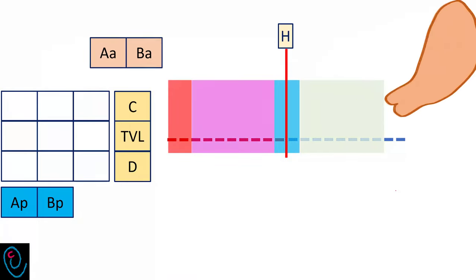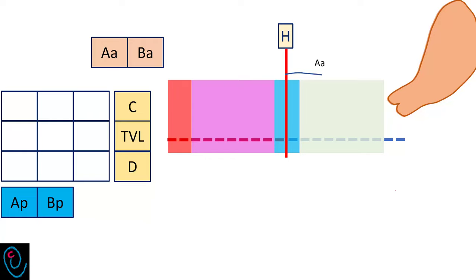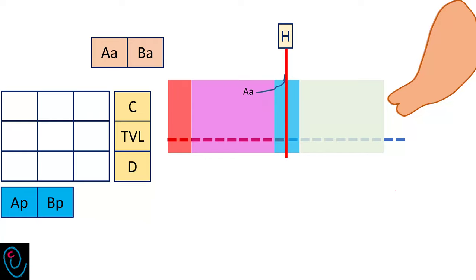Now let's move to the anterior compartment. The first 3 cm on the anterior vaginal wall is assessed by point A anterior, which is normally present 3 cm before the hymen — that is, minus 3. But it could be minus 2, minus 1, 0, plus 1, plus 2, or even plus 3.